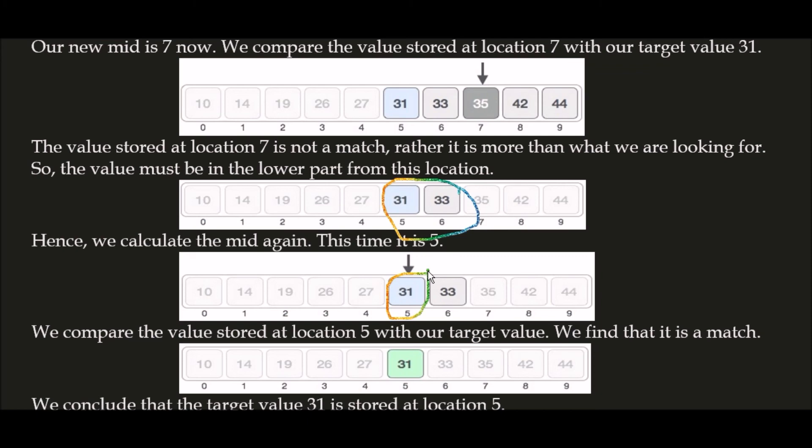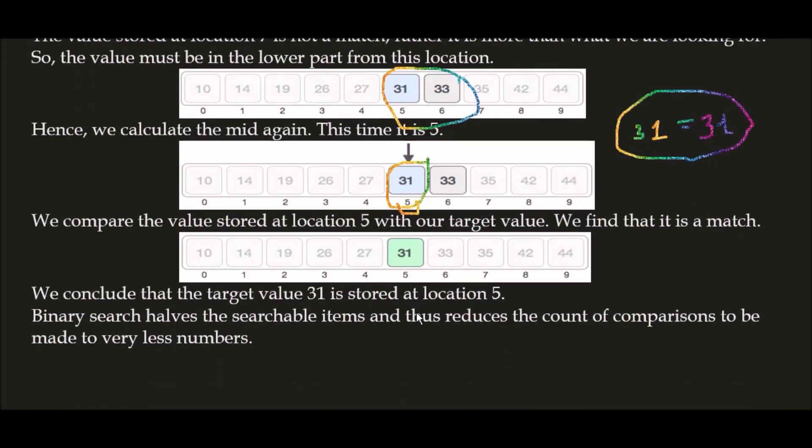So here the next mid value we get is at location 5, which is 31. Now we match the mid value, 31, with the targeted value, and it's equal to the targeted value. So the location is 5, this array location is 5, and it will be printed. This way you can search your target value with the help of binary search.